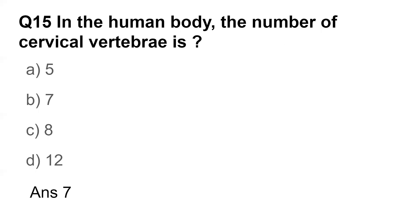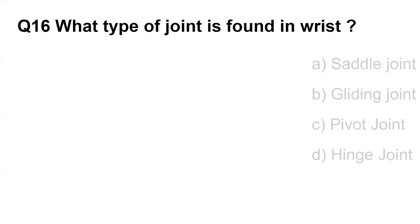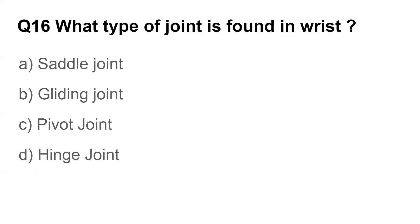Question number sixteen: What type of joint is found in the wrist? Options are saddle joint, gliding joint, pivot joint, and hinge joint. The answer is gliding joint. Gliding joints are formed between the carpal bones of the wrist.